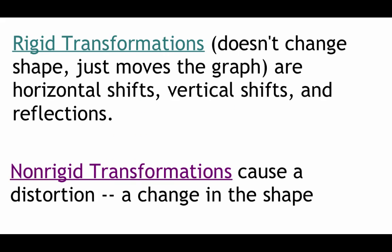Those things we looked at in part one of lesson 1.7 are classified as rigid transformations because they didn't change the shape of our graph at all. They just moved where that graph was located on our grid. So those horizontal shifts, vertical shifts, and reflections, those are all rigid transformations. As opposed to the things we're going to look at in this video, non-rigid transformations, these ones are going to cause some sort of distortion or a change in the shape of our graph.